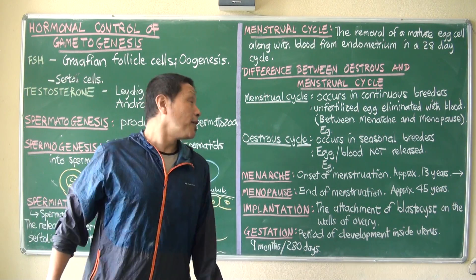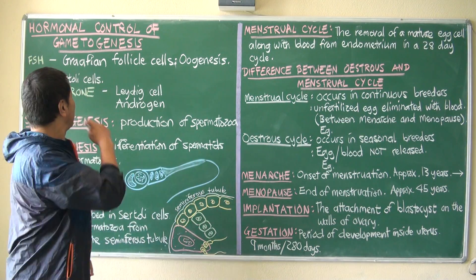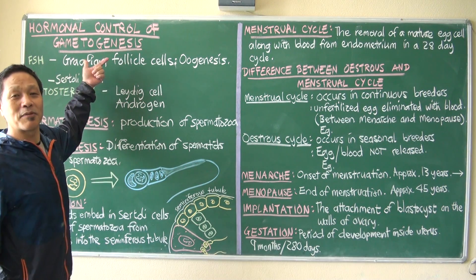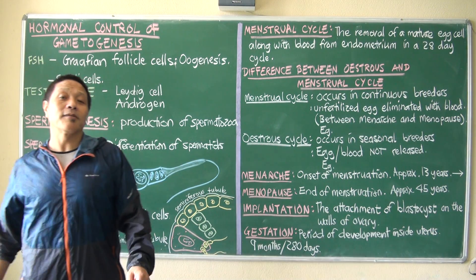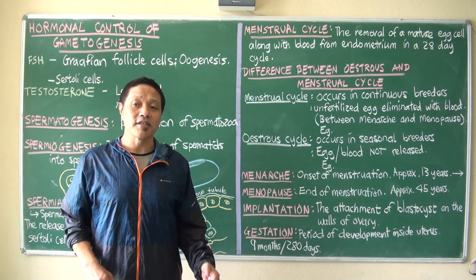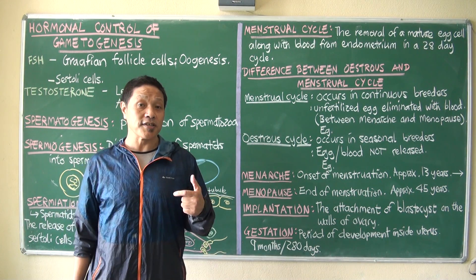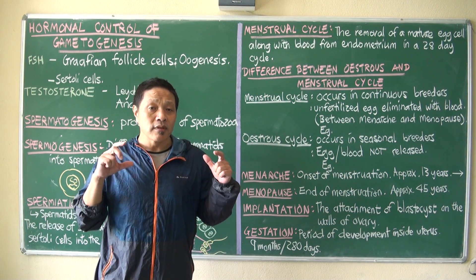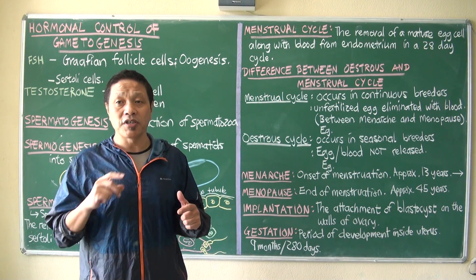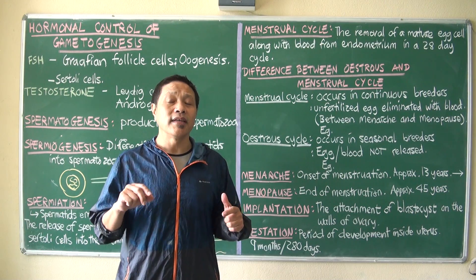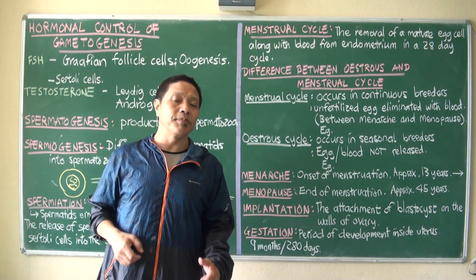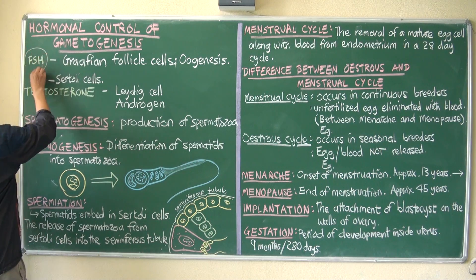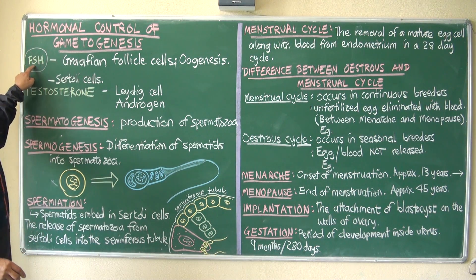Hello everybody. Today we will start with the hormonal control of gametogenesis. Last time we talked about what gametogenesis is — spermatogenesis and oogenesis. Now these processes are actually controlled by hormones which are released by the anterior pituitary gland. We will talk about FSH first — Follicle Stimulating Hormone.